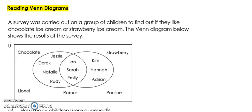Okay, everybody, so we've been doing constructing Venn diagrams, but sometimes they don't ask us to draw a Venn diagram. What they do, what you will get is a case where they will give you a Venn diagram and you have to read or interpret what the Venn diagram is saying. So let us look at this question. It says, a survey was carried out on a group of children to find out if they liked chocolate ice cream or strawberry ice cream. The Venn diagram below shows the results of the survey.